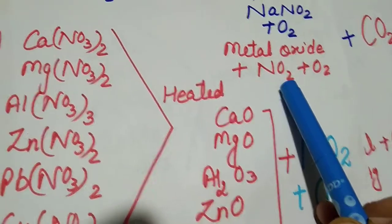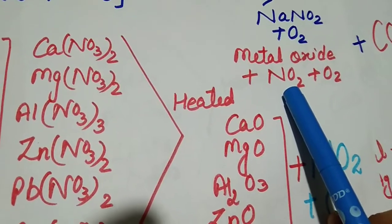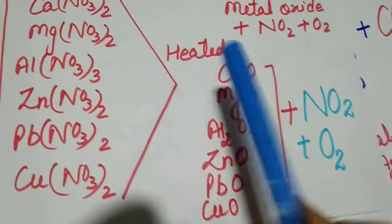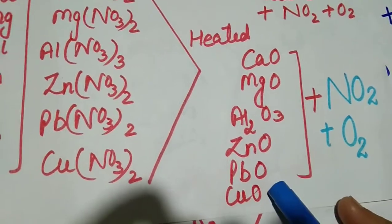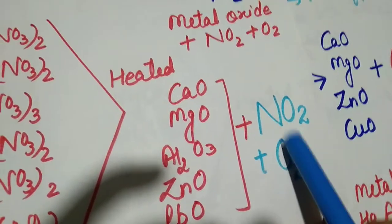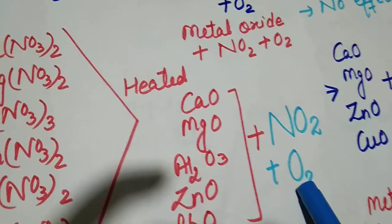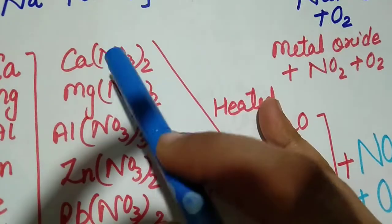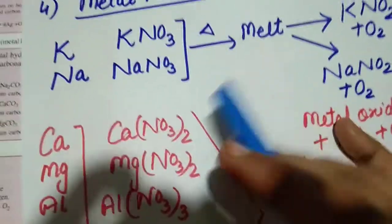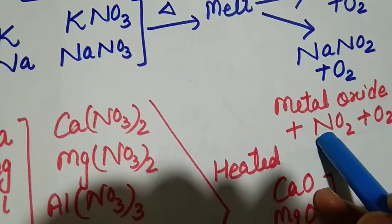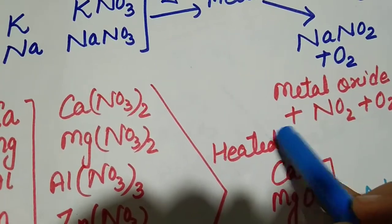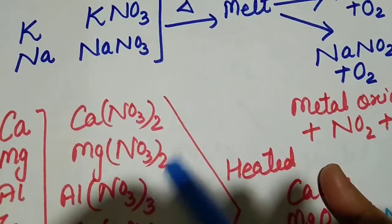So nitrogen dioxide and oxygen are liberated. It changes into calcium oxide, magnesium oxide, aluminium oxide up to copper oxide plus common gas nitrogen dioxide NO2 and oxygen O2. Mind it, when you had carbonate CO3, which gas was liberated? CO2. Now you have NO3, so which gas is liberated? NO2. These are hints we keep in mind while learning all these concepts.